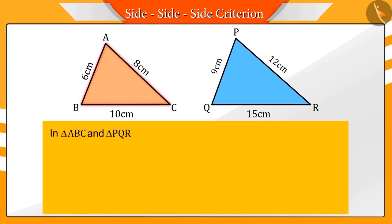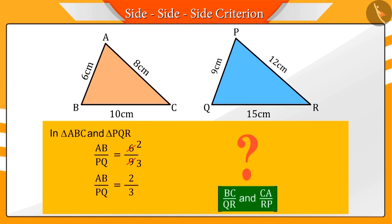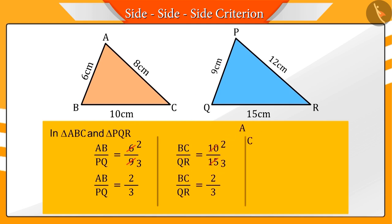He wonders if all these triangular signboards are similar or not. Let's see. In triangles ABC and PQR, the ratio of corresponding sides AB and PQ is found to be 2 by 3. Can you tell the ratio of BC by QR and CA by RP? Correct. Their ratio is equal to 2 by 3.